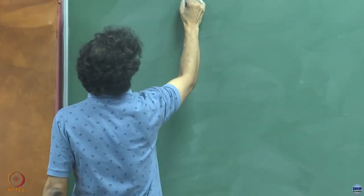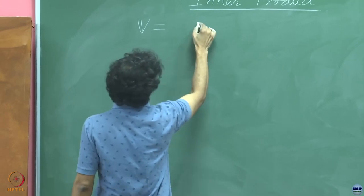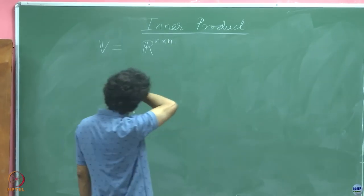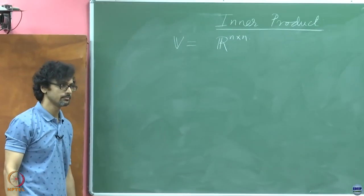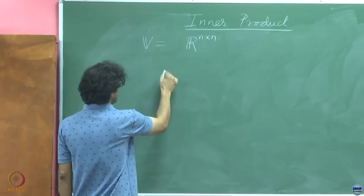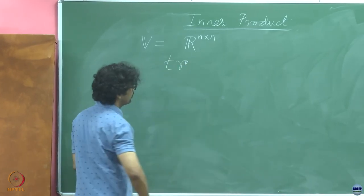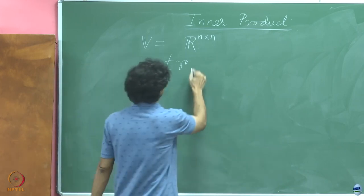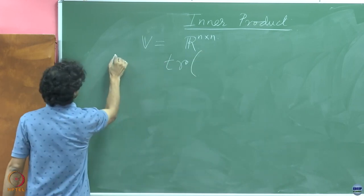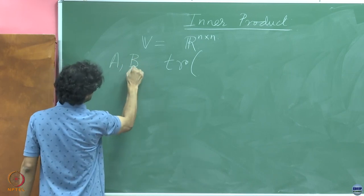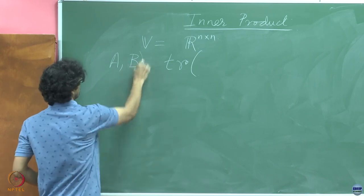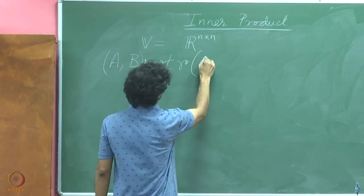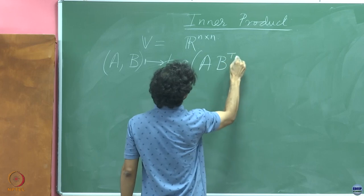Let us consider V equal to real N×N matrices, and look at what is called a trace — the sum of the diagonal entries of a matrix. That is the trace of a matrix. You have A and B, two matrices, and they get mapped to the trace of A times B transposed.